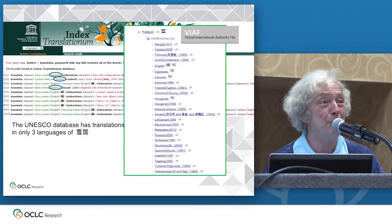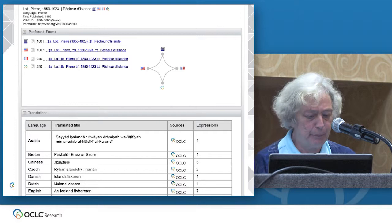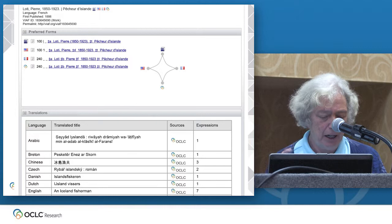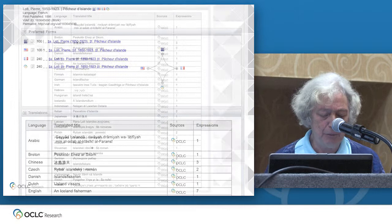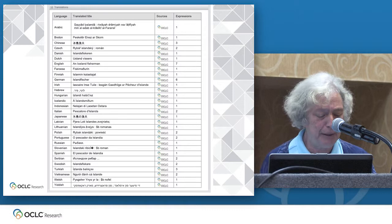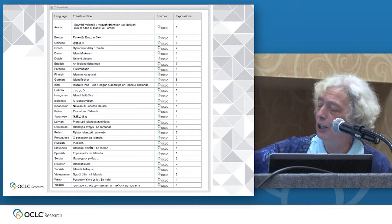We are now working on enhancing the VIAF display to make the contents of these records more visible. This is a mock-up of a VIAF consolidated display showing the work with expression summary. It shows each title as it is translated. Then we have a mock-up of the full expression summary for the work Pêcheurs d'Islande by Pierre Loti, showing all of them in a single list by language and translated title.